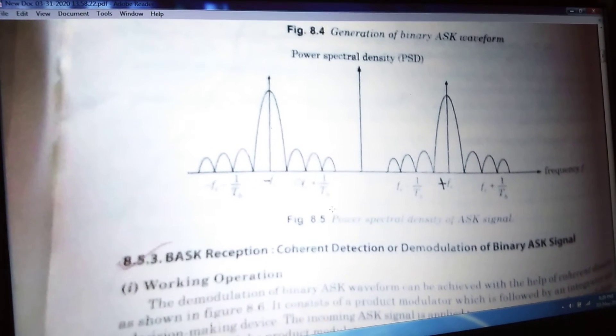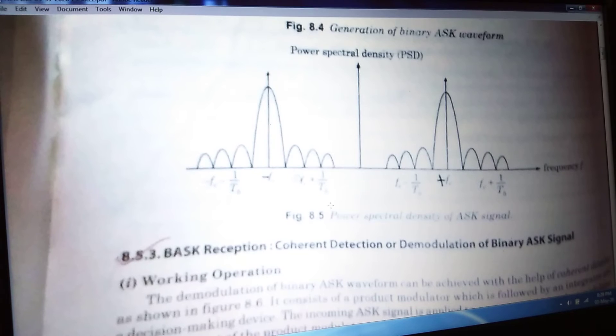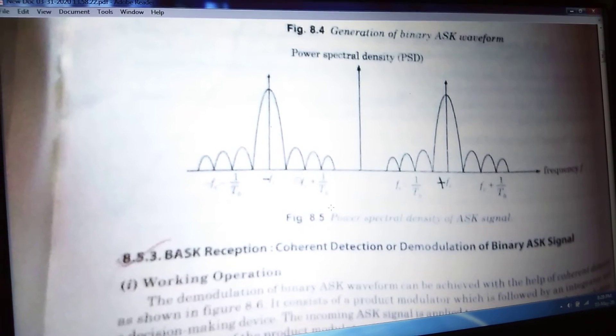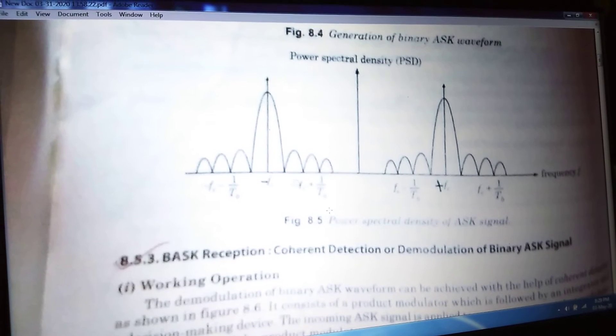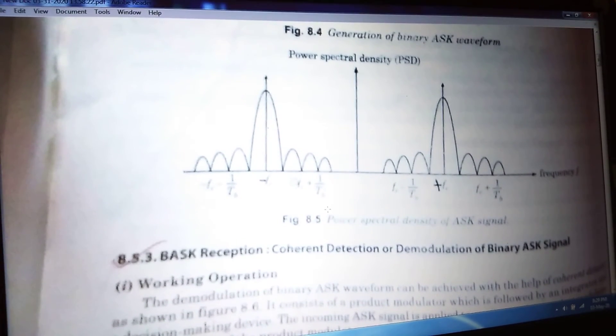Next, we will see the power spectral density of the ASK signal, that is also very important. So at the central frequencies, plus fc and minus fc, we are getting the power spectral density that we are visualizing in this case.